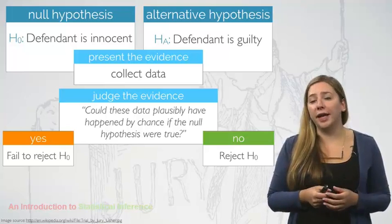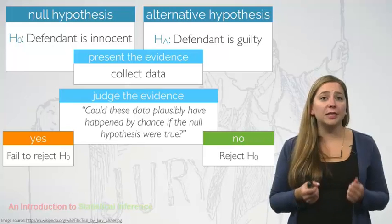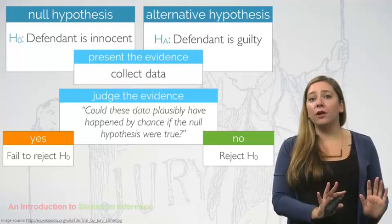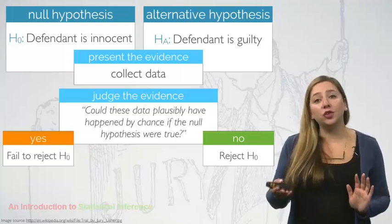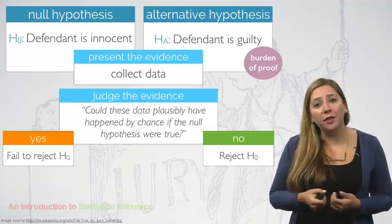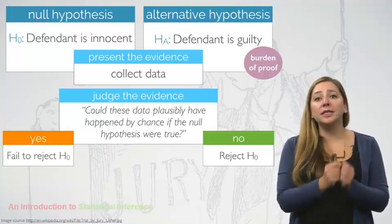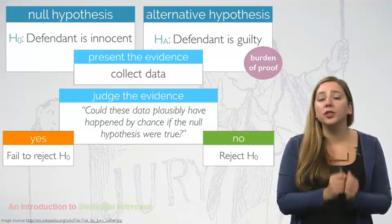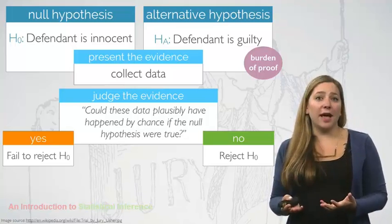If the data were very unlikely to have occurred, then the evidence raises more than a reasonable doubt in our minds about the null hypothesis, and hence we reject the null hypothesis in favour of the alternative hypothesis of guilty. In a trial, the burden of proof is on the prosecution. In a hypothesis test, the burden of proof is on the unusual claim. The null hypothesis is the ordinary state of affairs, the status quo. So it's the alternative hypothesis that we must consider unusual and for which we must gather evidence.